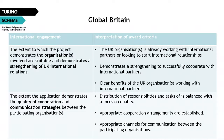The Global Britain objective is mostly touched upon in the International Engagement section of the application form. Turing Scheme projects should support high-quality placements, enhance existing partnerships, and encourage the forging of new relationships across the world. The first criteria the assessor looks at is the extent to which the project demonstrates the organizations involved are suitable and demonstrates the strengthening of UK international relations. The application should clearly demonstrate that the participating UK organization is already working with international partners or looking to start international relationships with suitable project partners.